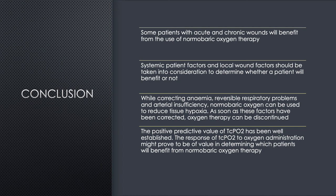A select group of patients with acute and chronic wounds will benefit from the use of normobaric oxygen therapy. Systemic patient factors and local wound factors should be taken into consideration to determine whether a patient will benefit. While treating the patient by correcting anemia, treating reversible respiratory problems, and correcting arterial insufficiency, normobaric oxygen can be used to reduce tissue hypoxia as a temporary measure. As soon as these systemic factors have been corrected, oxygen therapy could be discontinued. The positive predictive value of TcPO2 on room air has been well established, and the response of TcPO2 to oxygen administration might prove valuable in determining which patients with wounds will benefit from normobaric oxygen therapy.